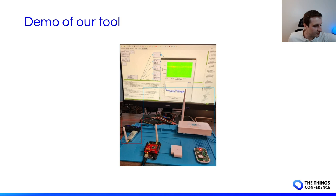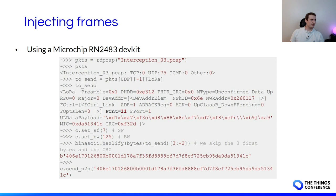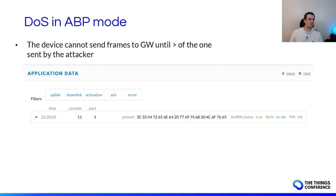We can also inject frames using a specified dongle, and using that dongle we can reproduce a replay attack — for example in ABP mode. If you capture a packet after the counter has reached its maximum, after a certain time you can reuse that packet to try to DoS an end-node device. This is one of the vulnerabilities: you can replay packets in this scenario.